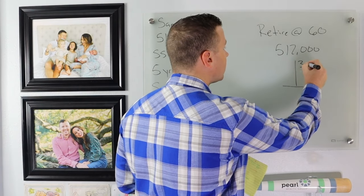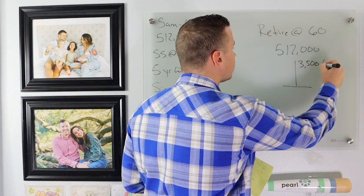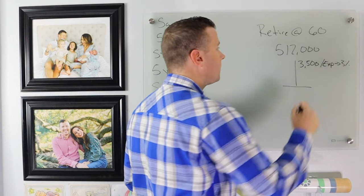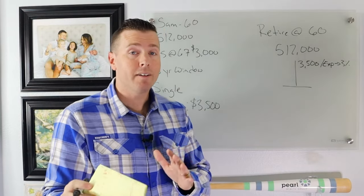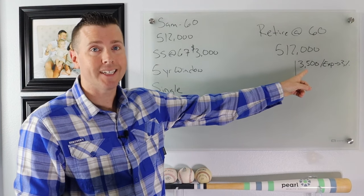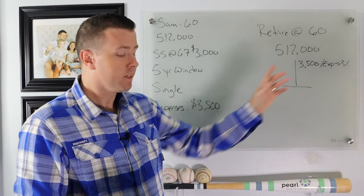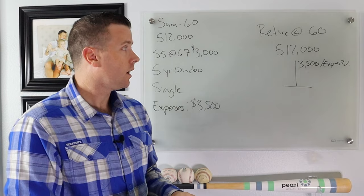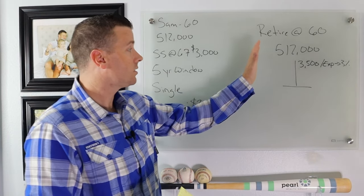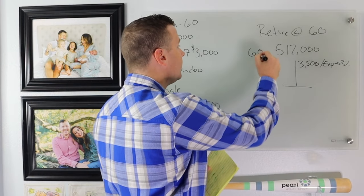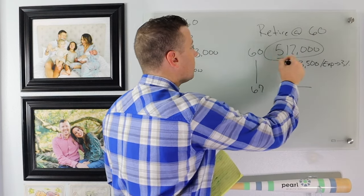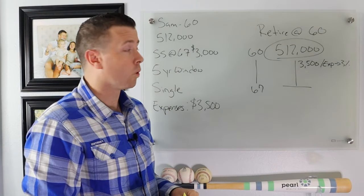Now remember, her expenses are $3,500 per month. These are going to get a 3% inflation rate. So every month, we're going to look at inflation on this $3,500 in expenses. Now she does have Social Security. It's going to start at 67. But from age 60 to 67, all of her income is going to come from her $512,000 that she saved for retirement.